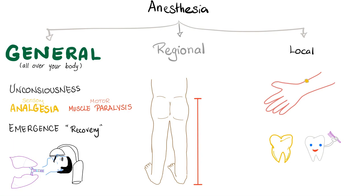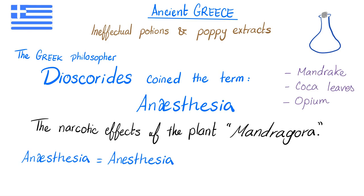Let's start with ancient Greece. They used ineffectual potions and poppy extracts. The Greek philosopher Dioscorides coined the term anesthesia, which means basically no sensation or no consciousness — a drug-induced, reversible state of unconsciousness and no pain sensation. Dioscorides coined the term because he observed the narcotic effects of the plant Mandragora. You can write anesthesia this way or this way, just with Æ for simplicity.